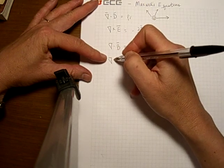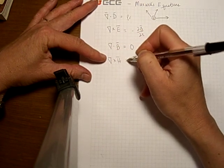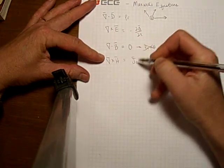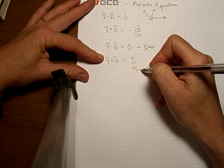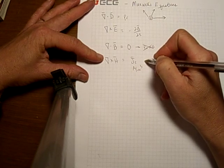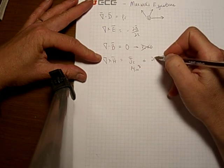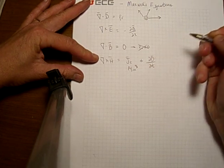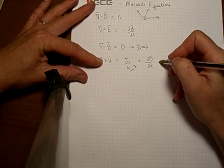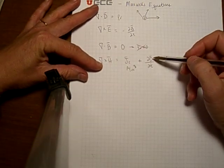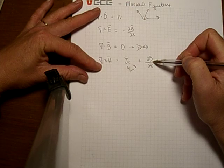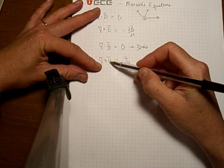The fourth Maxwell's equation is that the curl of the magnetic field is equal to the conduction current density given in amps per meter squared plus the time derivative of the electric flux density. Here you can see that a time varying electric field produces a magnetic field.